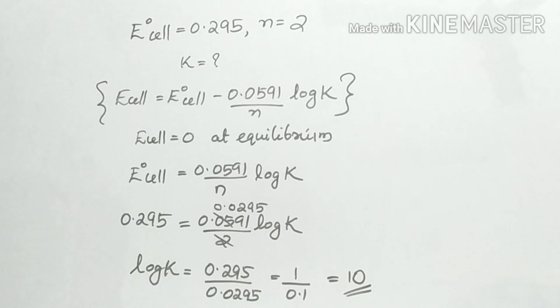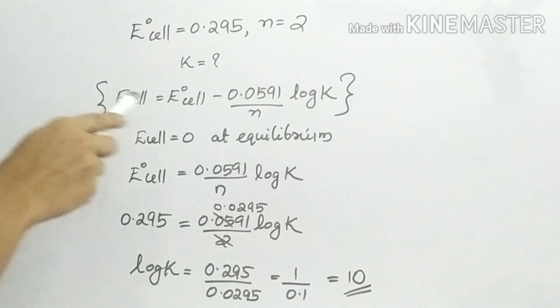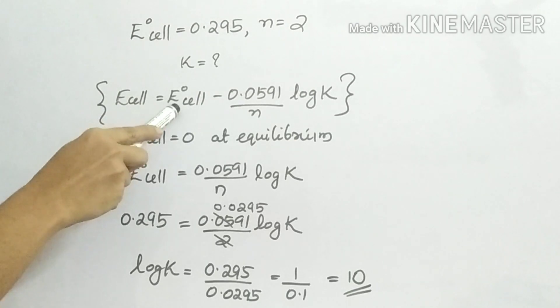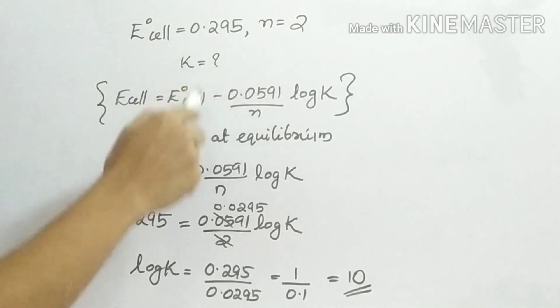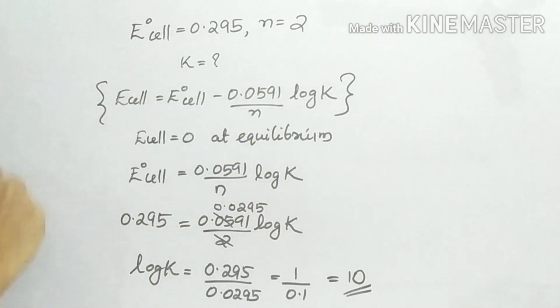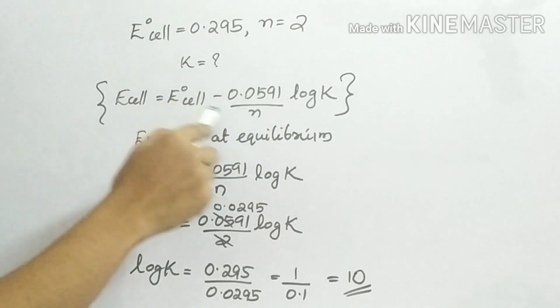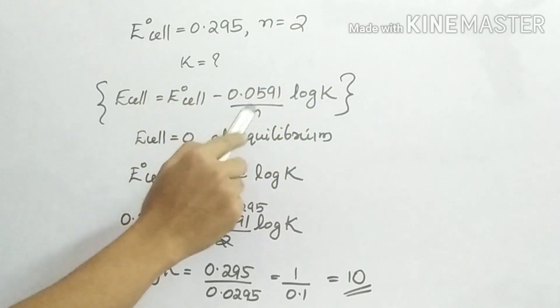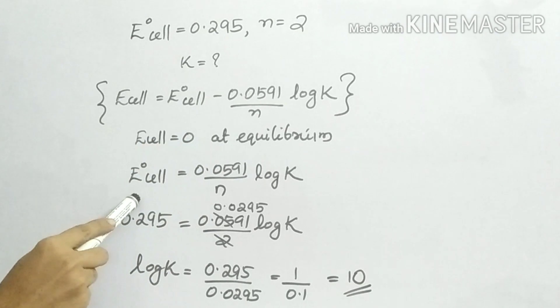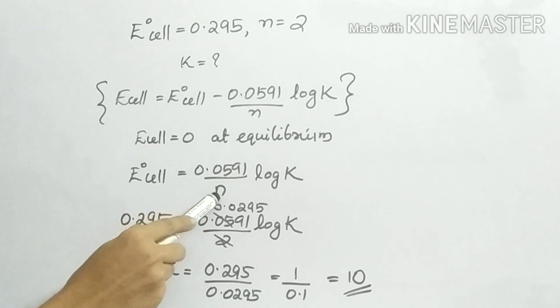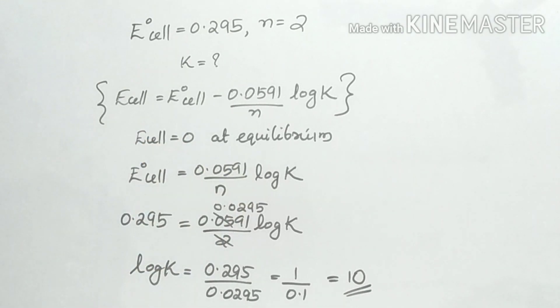In this equation, E0 cell is enough. At the average, the term is positive. E0 is equal to 0.0591 divided by n, times log K.